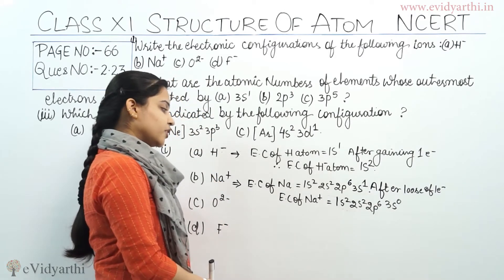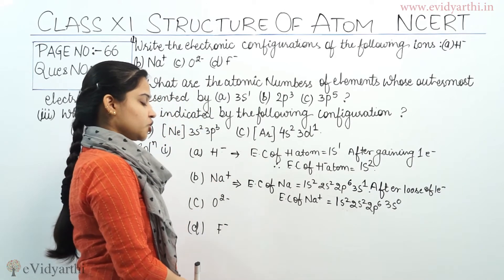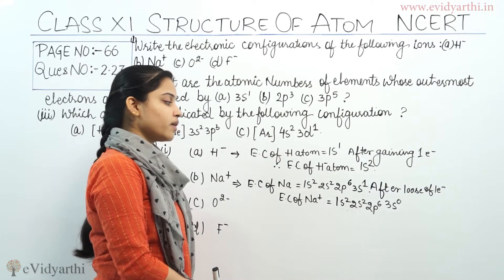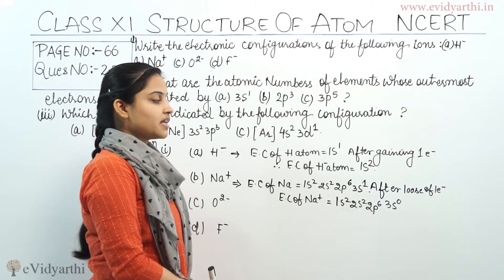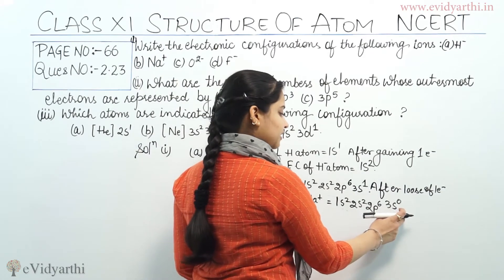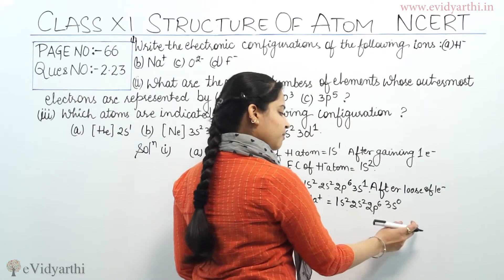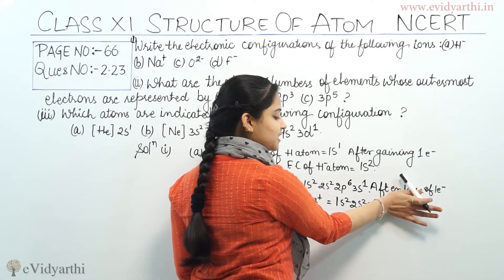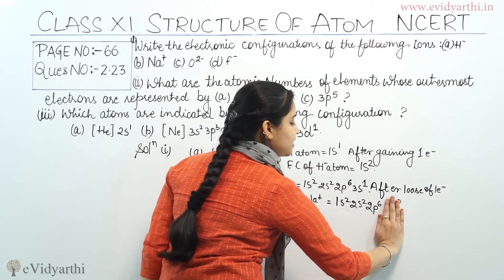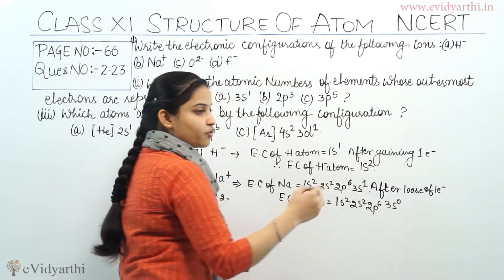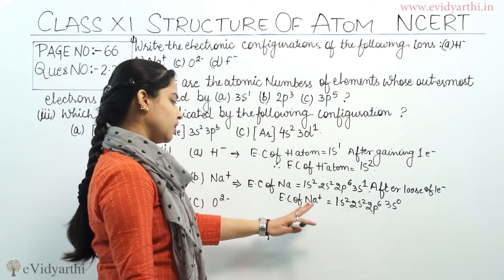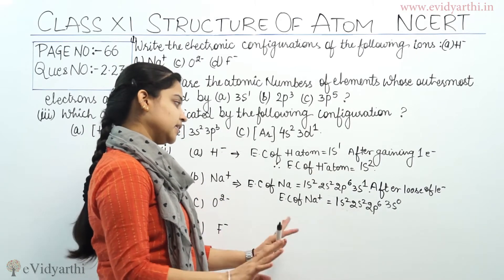The electronic configuration of Na positive becomes 1s2, 2s2, 2p6, and 3s0. The 3s orbital has no electron because the electron was lost. We can write 3s0 or simply stop at 2p6 — either way is the same thing.